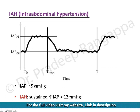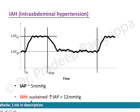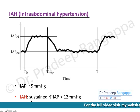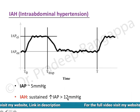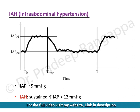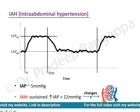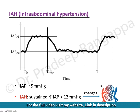Intra-abdominal hypertension is defined as a sustained increase — the word 'sustained' is important. When we cough or have any acute illness, the intra-abdominal pressure may transiently rise, but when there is a sustained increase more than 12 millimeters of mercury, we call it intra-abdominal hypertension. This causes changes in the microcirculation and in the circulation of the bowels.